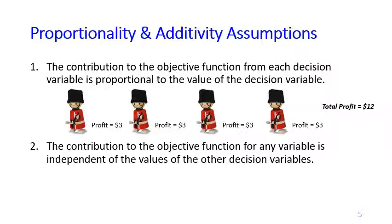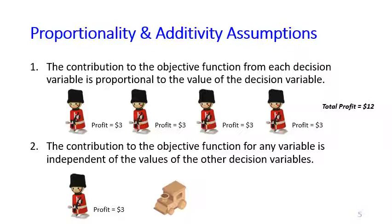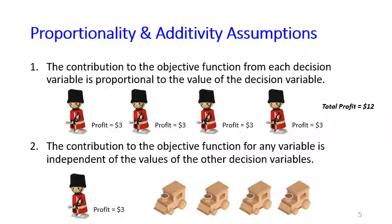The additivity assumption says that the contribution to the objective function for any variable is independent of the other decision variables. So if the profit of one soldier is $3, it does not depend on whether you produce one, two, three, or four trains. Whatever the number of trains you produce, the profit for one soldier always equals $3, so you can add the profits from soldiers and trains independently.